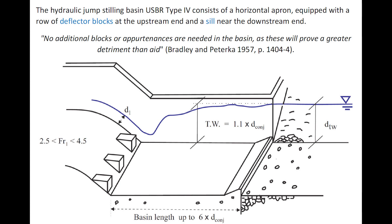The hydraulic jump stilling basin Type 4 consists of a horizontal apron equipped with a row of deflector blocks at the upstream end, and a sill near the downstream end. The developers noted that no additional blocks or appurtenances are needed in the basin, as these will prove a greater detriment than aid.